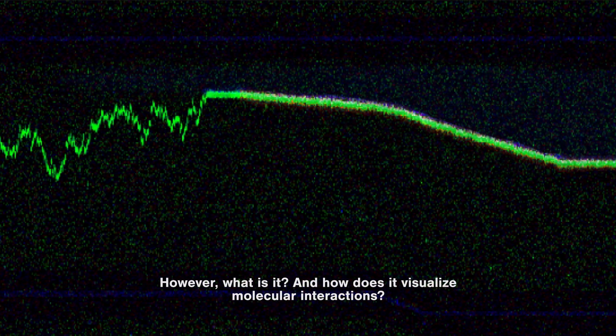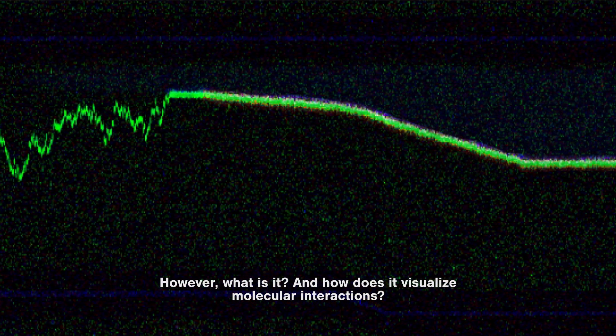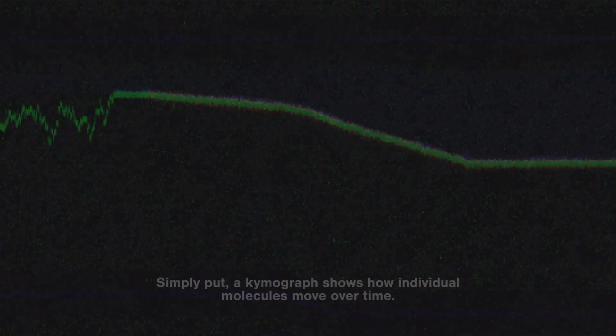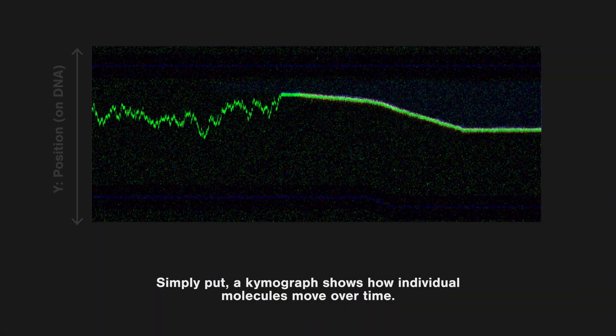However, what is it? And how does it visualize molecular interactions? Simply put, a kymograph shows how individual molecules move over time.